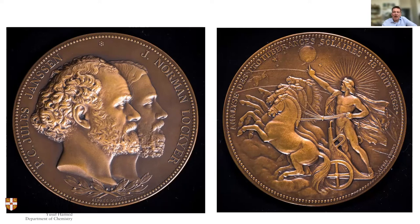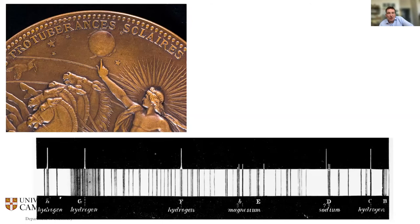The medal celebrates their joint discovery. We can see both spectra: the normal solar spectrum below with the dark Fraunhofer lines, and above it the emission lines from the solar atmosphere — bright lines given out by atoms in the sun's atmosphere.